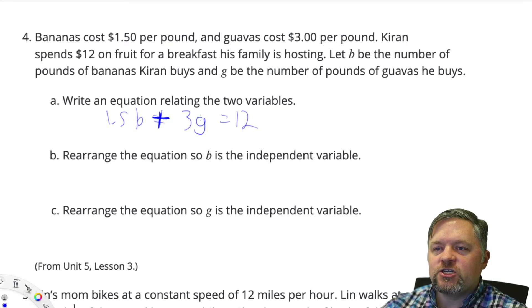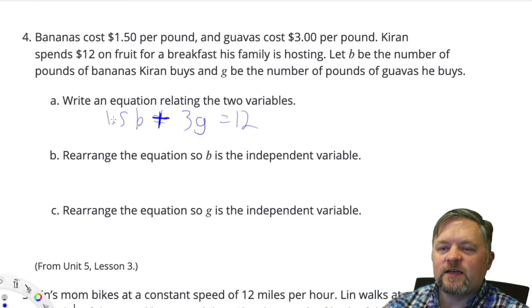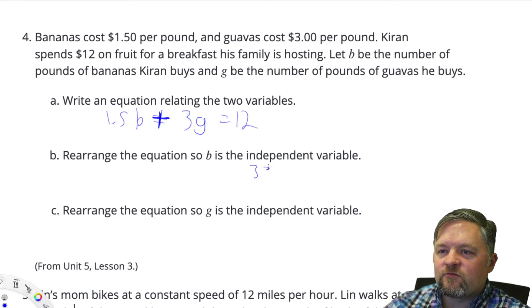So to make this look like g equals something, we have to get rid of this first. How would we get rid of that? We would subtract it. Subtract it from this side, it'll cancel. And we would have 3g, because this cancelled, equals 12 subtract 1.5b.